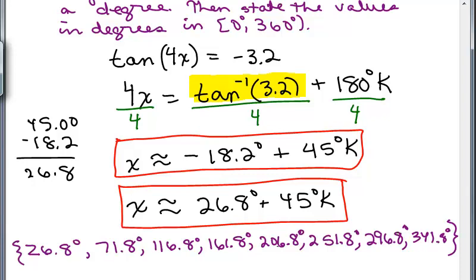So I ended up with 1, 2, 3, 4, 5, 6, 7, 8. There's 8 solutions between 0 and 360 degrees.